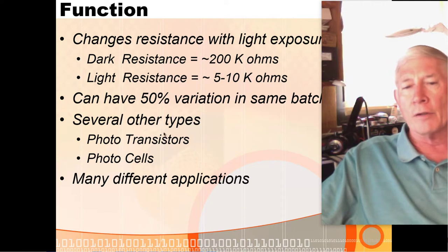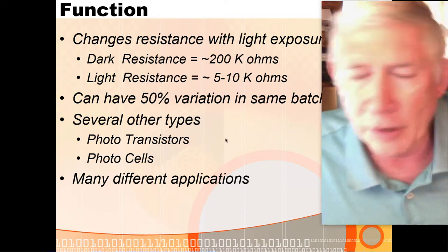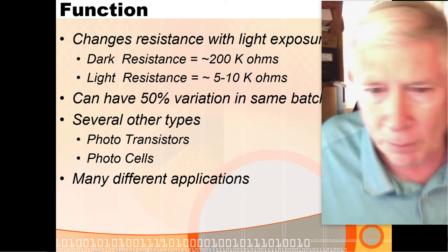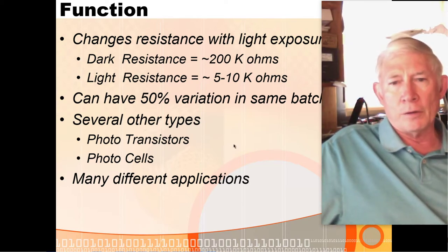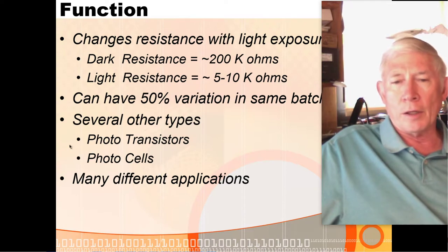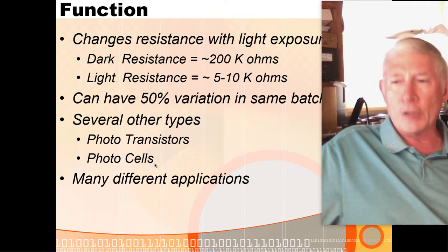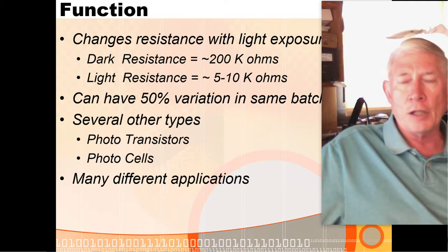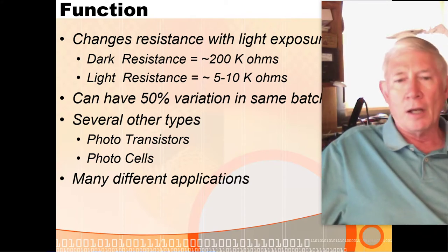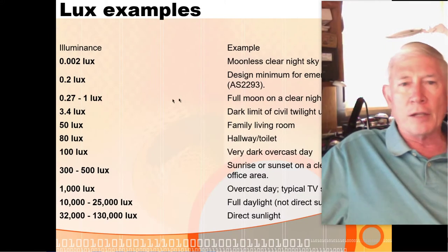Other options include photovoltaic cells and phototransistors. Phototransistors can be pretty sensitive because they're an active component — light dramatically affects current flow through the transistor. A photovoltaic cell actually generates electricity so we can measure that directly. The photoresistor doesn't generate electricity — you have to run some current through it in order to use it to sense.